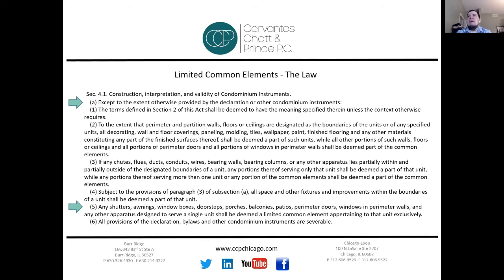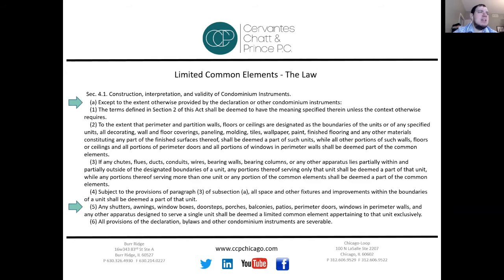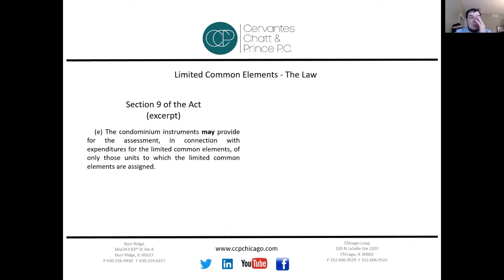When we talk about limited common elements, we generally have a definition in our declaration, but there's also a definition in the law. Section 4.1 of the Condominium Property Act states that in the event our condominium instruments — that's our declaration, bylaws, and plat — do not address what a limited common element is, these definitions and interpretations apply. Section 4.185 tells us limited common elements include porches, balconies, patios, perimeter doors, windows, perimeter walls, and any apparatus designed to serve a single unit.